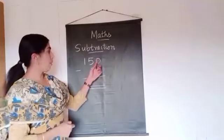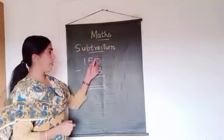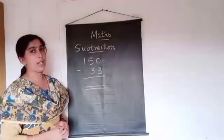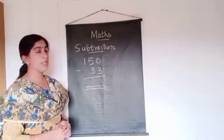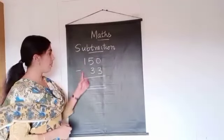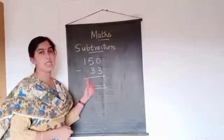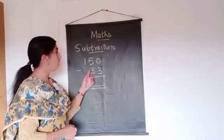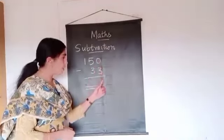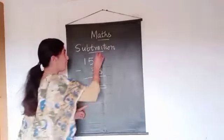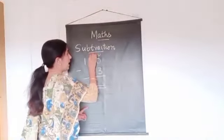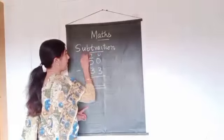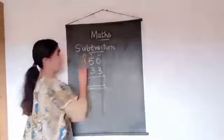First, we subtract from units place. Don't subtract from this side — that is wrong. We want to subtract from units place, then tens place, then hundreds place.